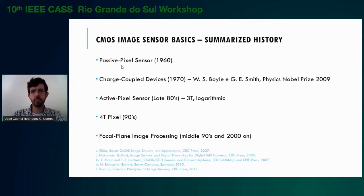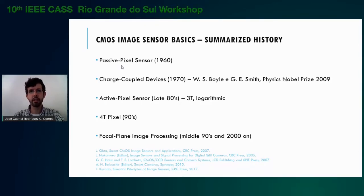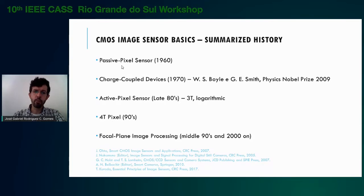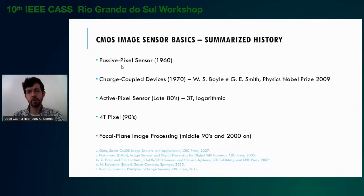The history of the CMOS image sensor dates back to the 1960s, when the first passive pixel sensors appeared. In those sensors, the photodiode voltage signal was not amplified, so images were very noisy, and CMOS sensors remained mostly undeveloped until the 1980s, when the 3T pixel appeared with its built-in transistor for amplification. In the meantime, CCD development in the 1970s, with much superior image quality, led to a market takeover by commercial products based on CCDs. Willard Boyle and George Smith won the Physics Nobel Prize in 2009 for this research. The 4T pixels, which appeared in the 1990s, led to CMOS sensors with much superior image quality, and that led to the market takeover by CMOS cameras. Over the last 20 years, people have been using additional transistors to process signals at the focal plane.